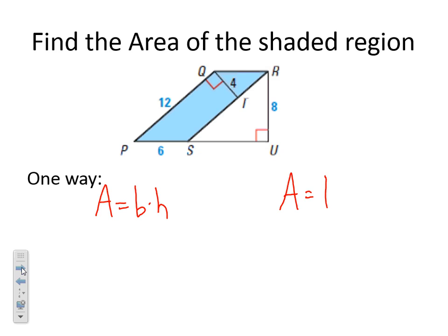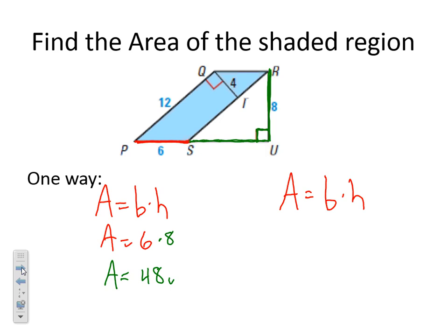If I call this my base — my area equals 6 — I need my height. It's very important that when we're finding height, it has to be at a right angle. So if I look at my base and extend it, this closest right angle is right here. This is going to be my height from R to Q. So it's going to be 6 times 8. Six times 8 is 48, and we must label it units squared.